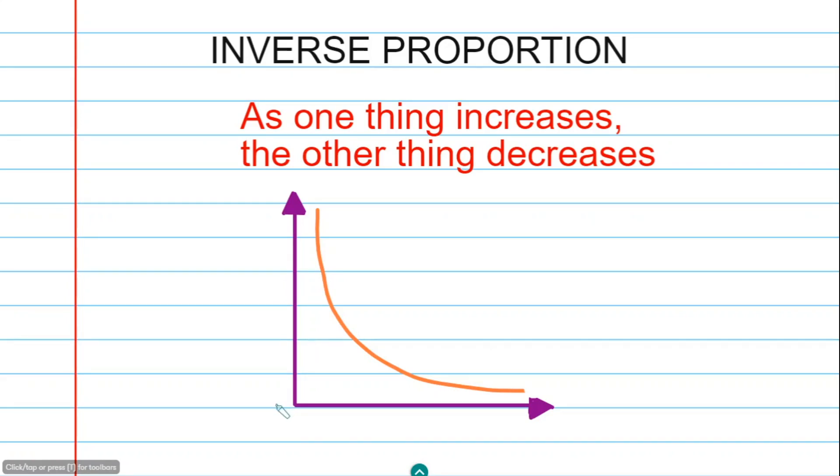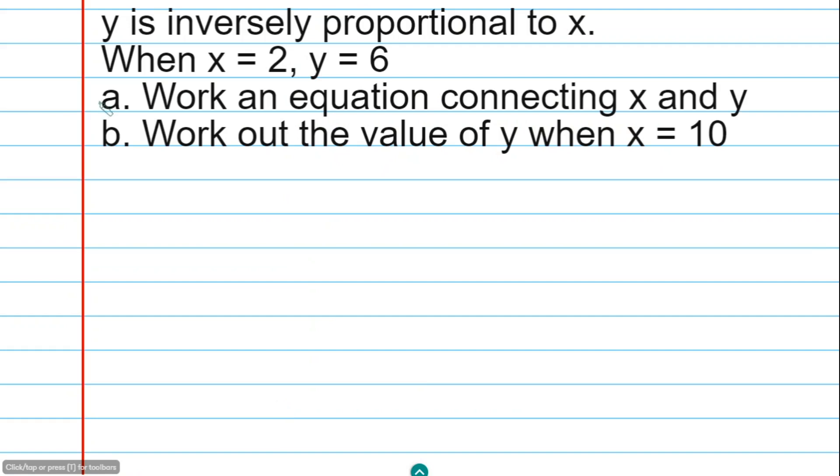So let's see an example for this. Now here we have a question: Y is inversely proportional to X. The two quantities here are Y and X. And then we need to work at an equation connecting X and Y, and then work at the value of Y when X is 10. So let's begin with the first line.